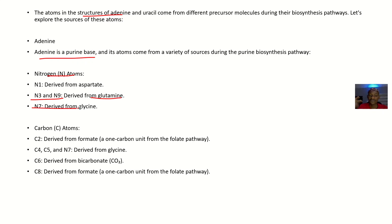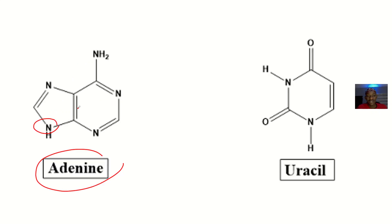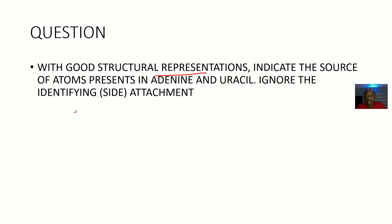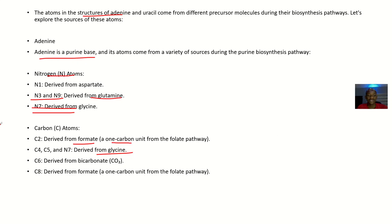Now looking at the carbon atoms of adenine: C2 is from formate, which is a one-carbon unit from the folate pathway. C4, C5, and N7 are derived from glycine — you can see that N7 comes from glycine. You'll barely find any of these details in a biochemistry textbook, which is why I say this question was uncalled for. C6 is derived from bicarbonate, and C8 is derived from formate, also from the folate pathway. That's it for adenine.